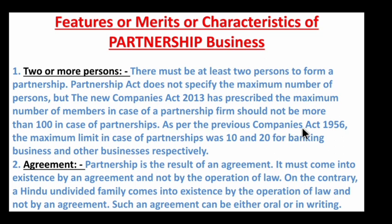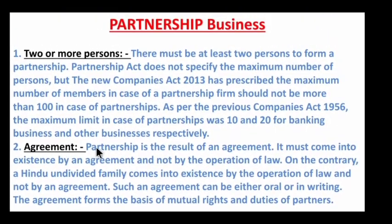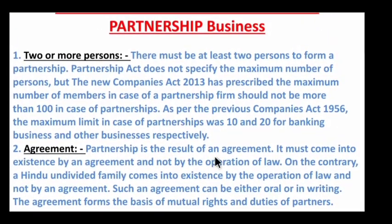As per the previous Companies Act 1956, the maximum limit in case of a partnership firm was 10 for non-banking business and 20 for banking business, respectively.